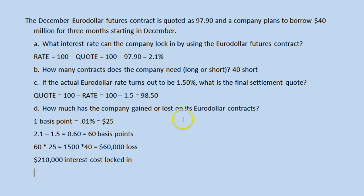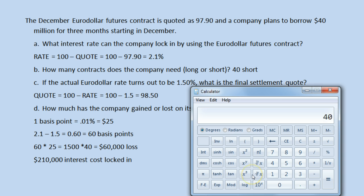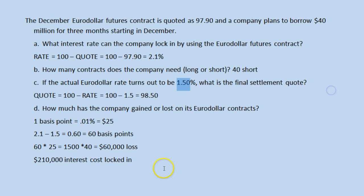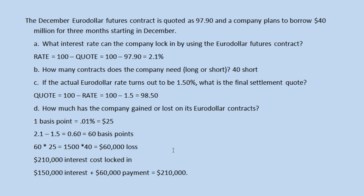When it actually comes time to borrow the money, the interest rate is only 1.5 percent. So their actual interest cost is $40 million times 1.5 percent times one quarter of a year, which is only $150,000. Plus they lost $60,000 on the Euro-dollar futures contract. So they ended up in total paying $210,000 — exactly what they were trying to do.